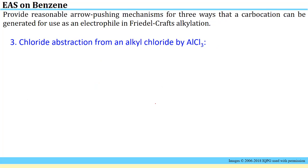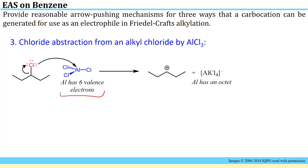A new way to produce carbocations that we didn't talk about in organic one is chloride abstraction from an alkyl chloride by aluminum trichloride. In this case, the fact that the aluminum in aluminum trichloride only has six valence electrons means that it has a pull for additional electrons to fulfill its octet. So this is a way for the chlorine-carbon bond to be broken and that's another way to generate a carbocation that could subsequently act as the electrophile for a Friedel-Crafts alkylation reaction.